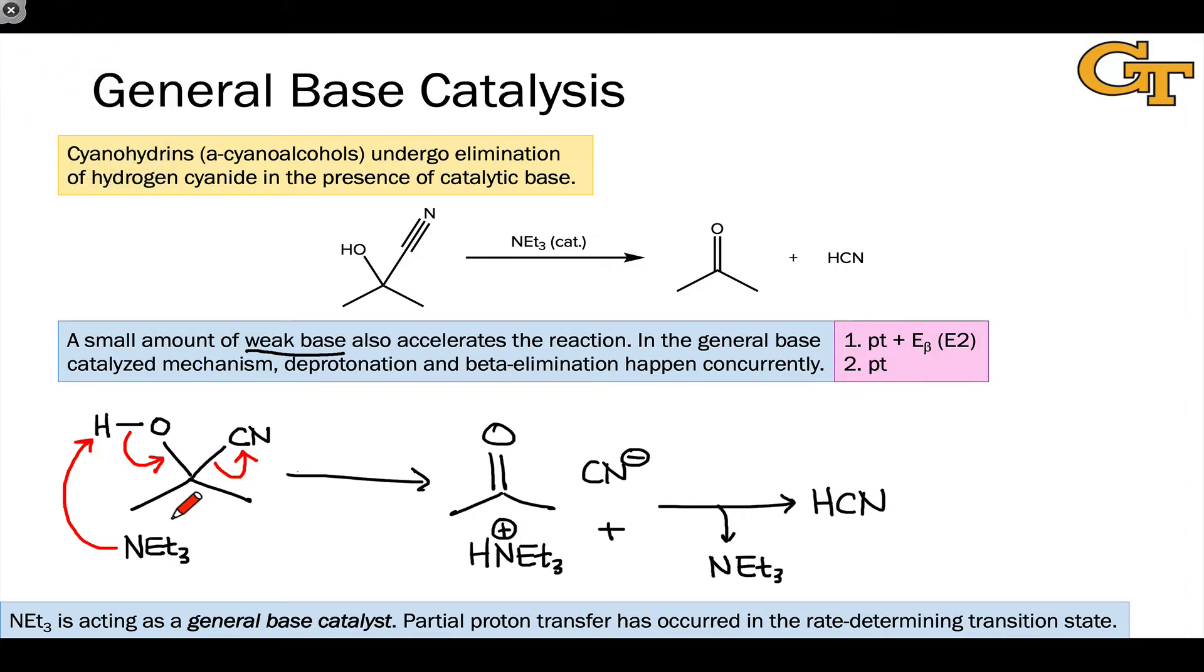And so if we were to label these steps, we might call the first step PT plus E-beta, since a proton transfer is occurring at the electron source, or nucleophilic atom, within the E-beta step, and the electrons that are freed up as a result of this proton transfer step, the electrons in the OH bond, are going into an E-beta step. Now, the perceptive may notice that this is simply an E2 elementary step.